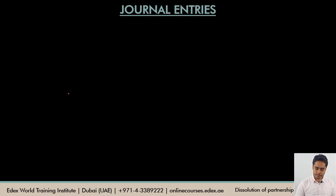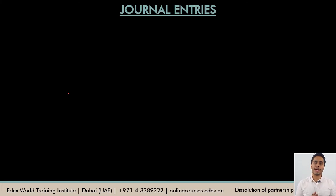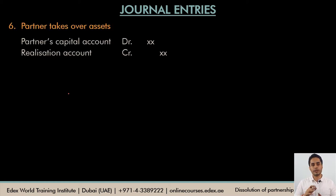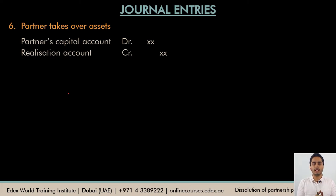At the time of dissolution, it could also happen that the firm may not sell the assets for cash to outsiders — it could ask the partners to take over the assets for a certain agreed value. When that happens, the firm will not receive money instantly. Instead, the partner's capital would be used. When assets were realized for cash, bank was debited and realization was credited. Now this entry is similar, but instead of bank being debited, we debit the partner's capital account and credit the realization account.